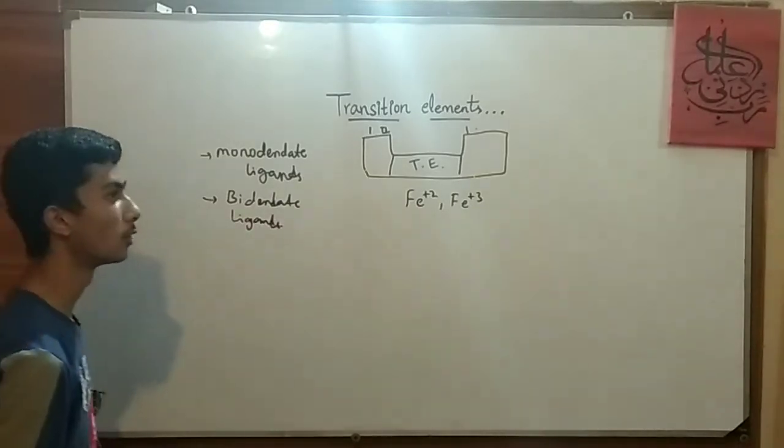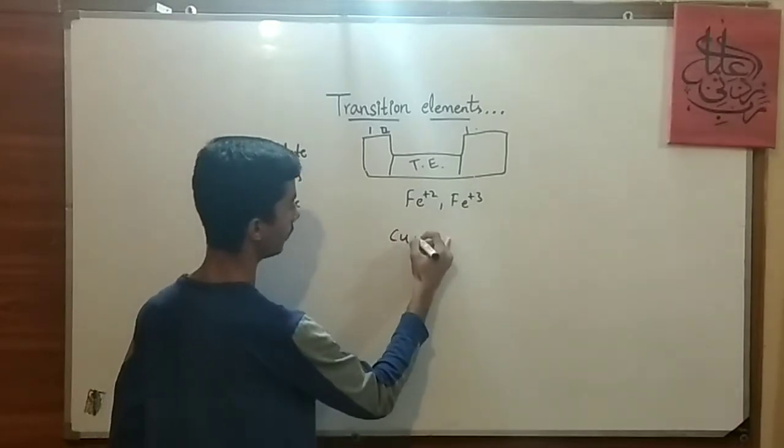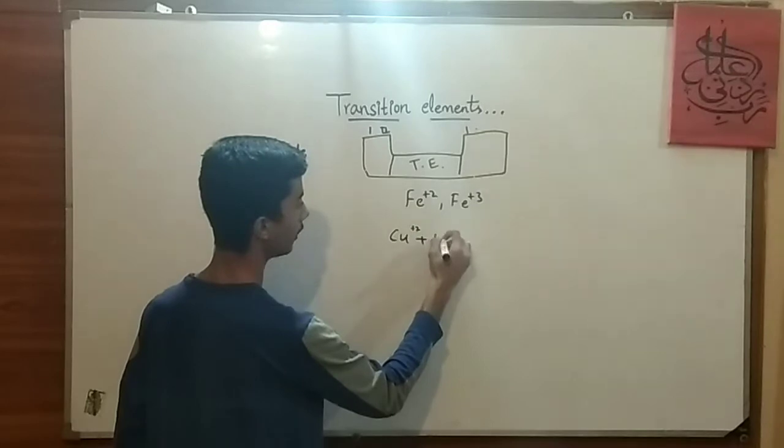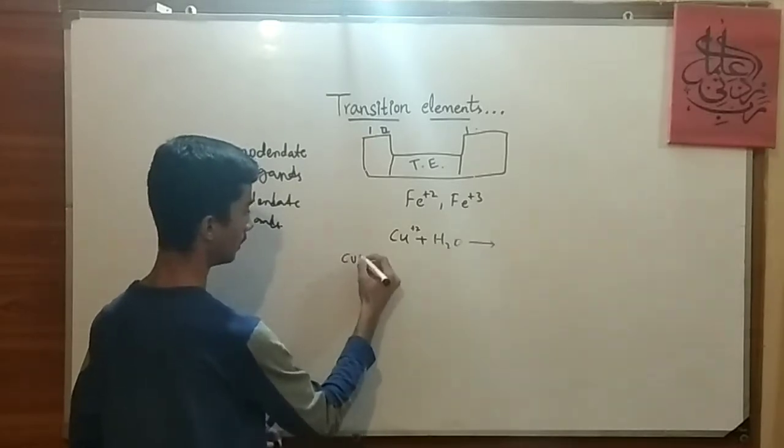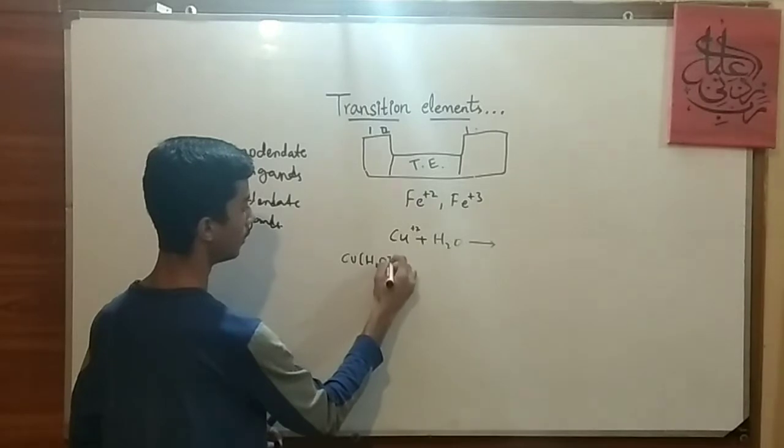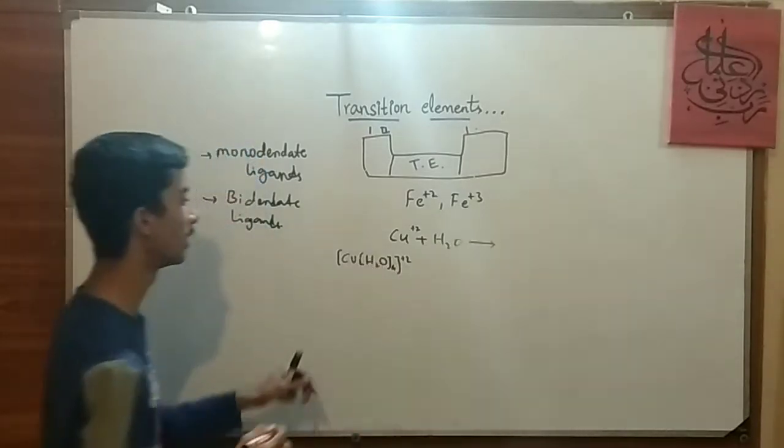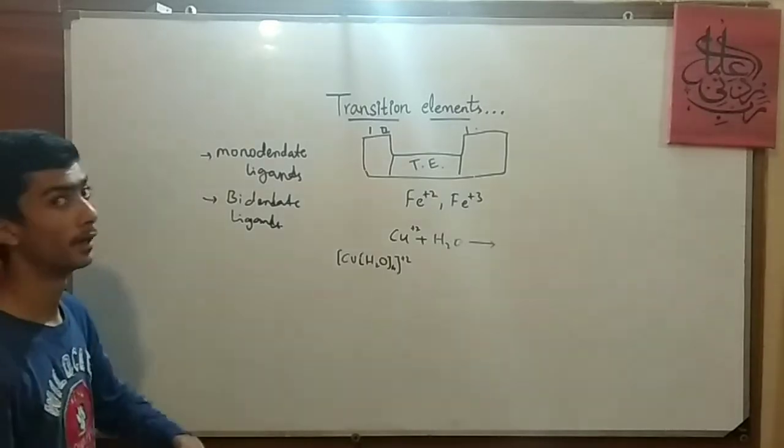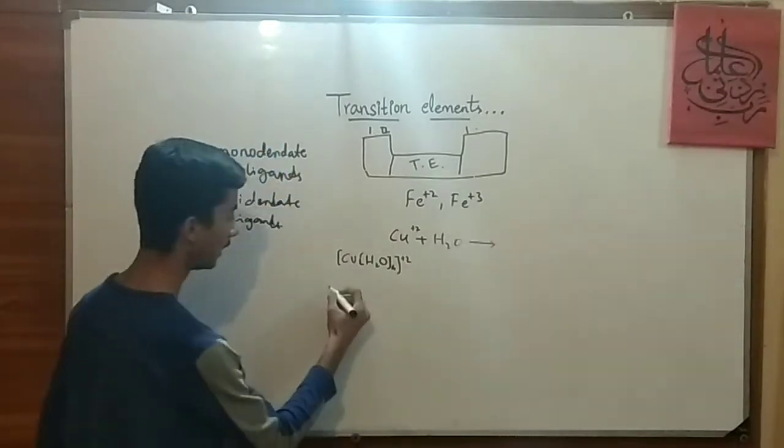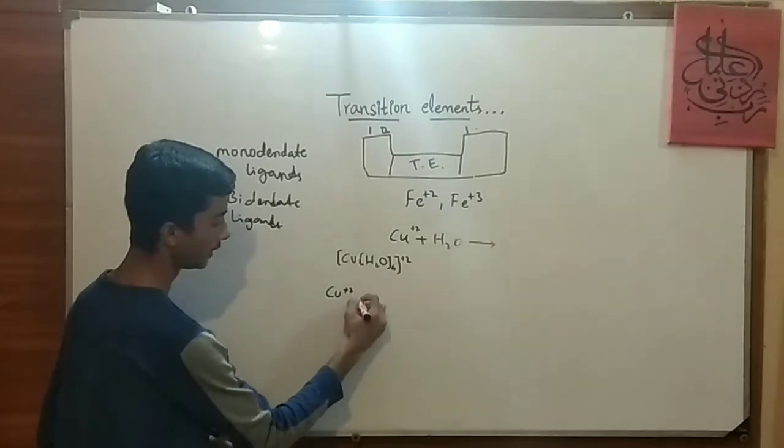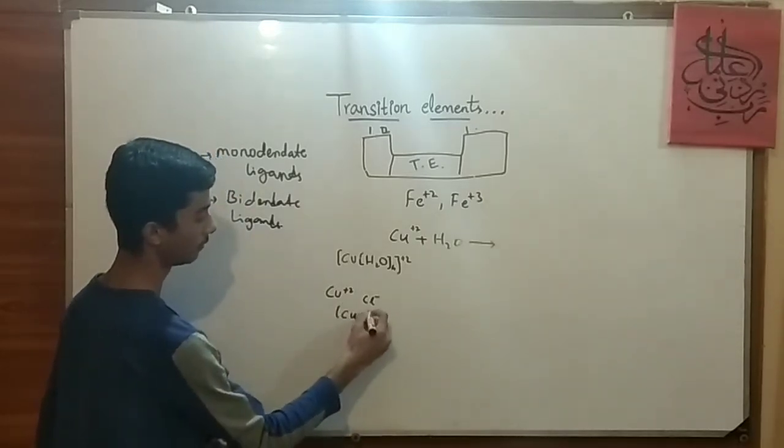Basically, the ligand forms the complexes. For example, if any compound is formed, if copper plus 2 is reacting with water, so it does form a compound which is known as copper, includes in the bracket H2O with 6, and the whole charge would be plus 2. If you are confused about how we are going to write copper, water, 6, and plus 2, you can just do by the help of, for example, if a compound has a charge like Cu plus 2 is reacting with Cl minus, so it would be CuCl4.